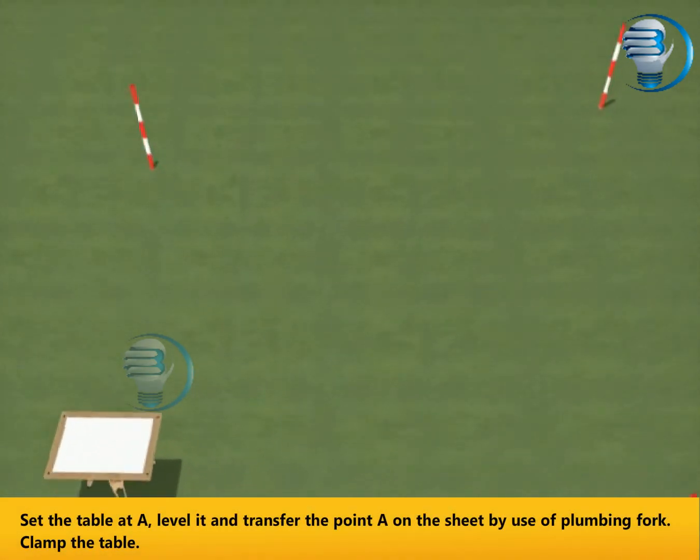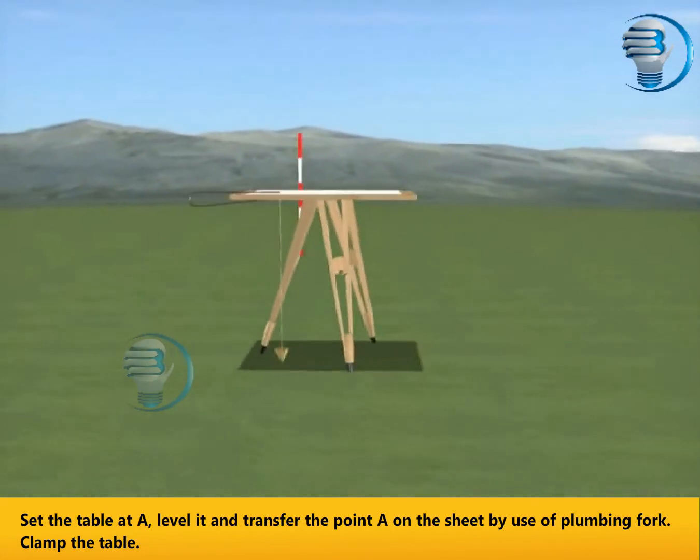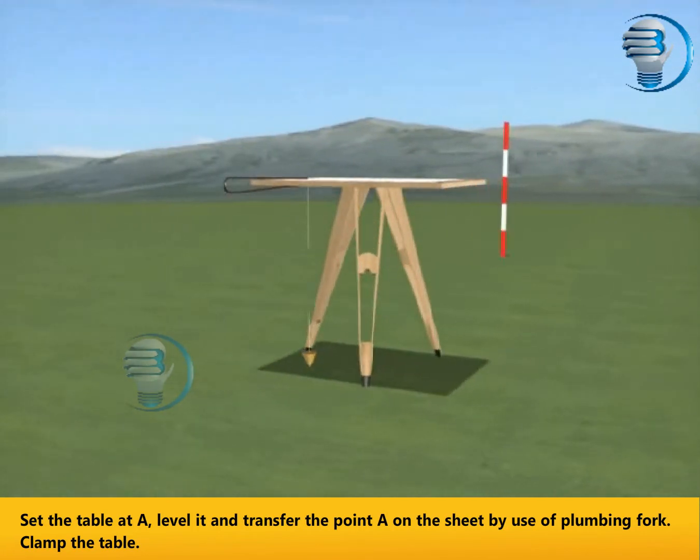Set the table at A. Level it and transfer the point A on the sheet by use of plumbing fork. Clamp the table.